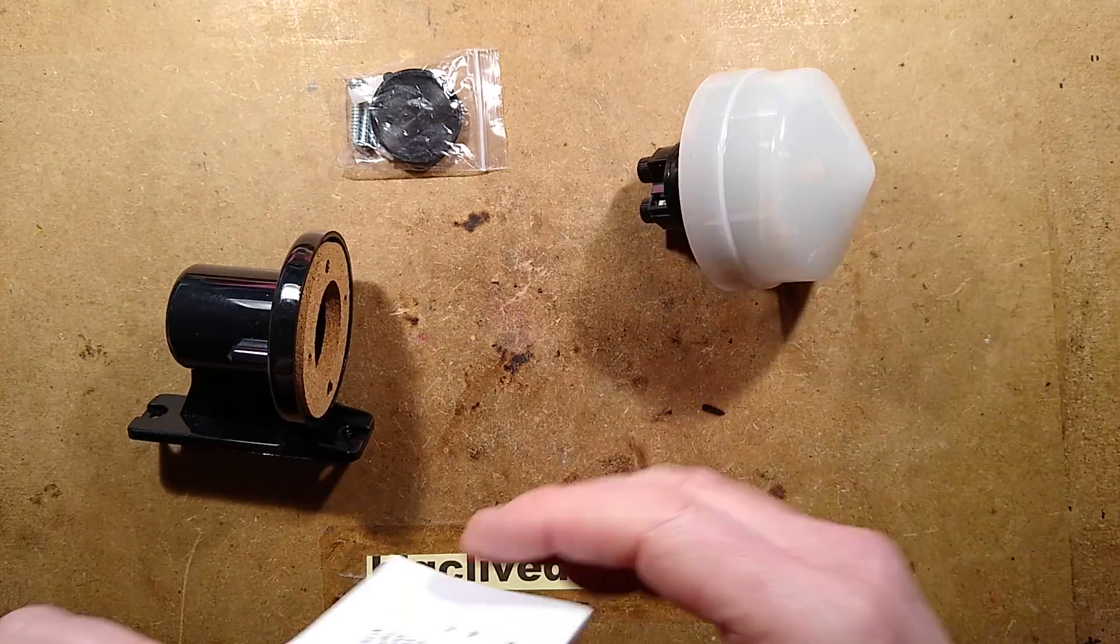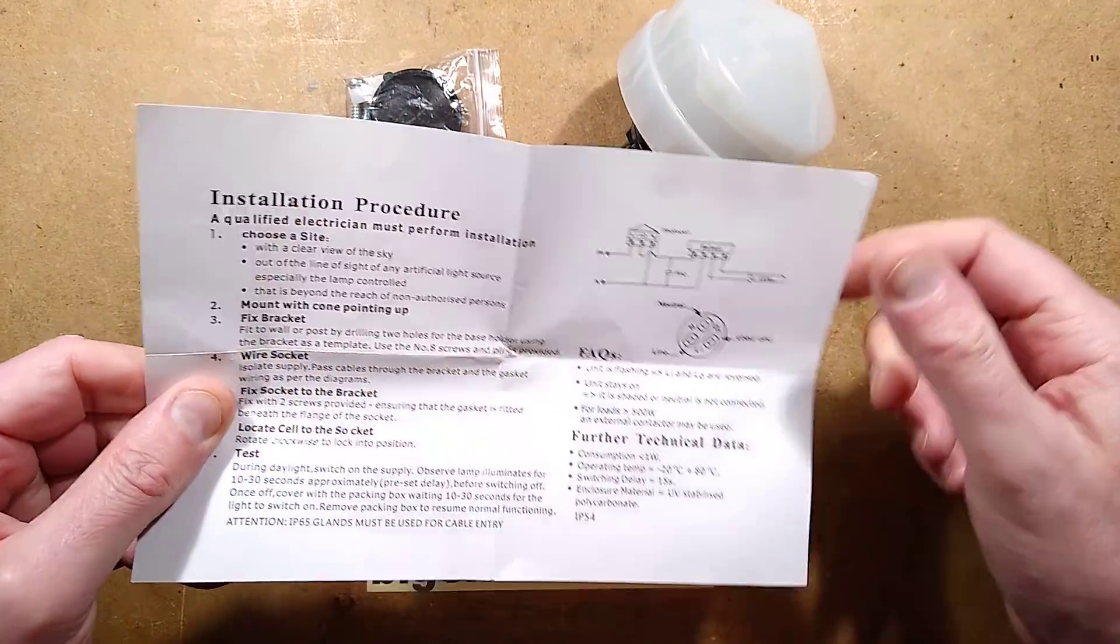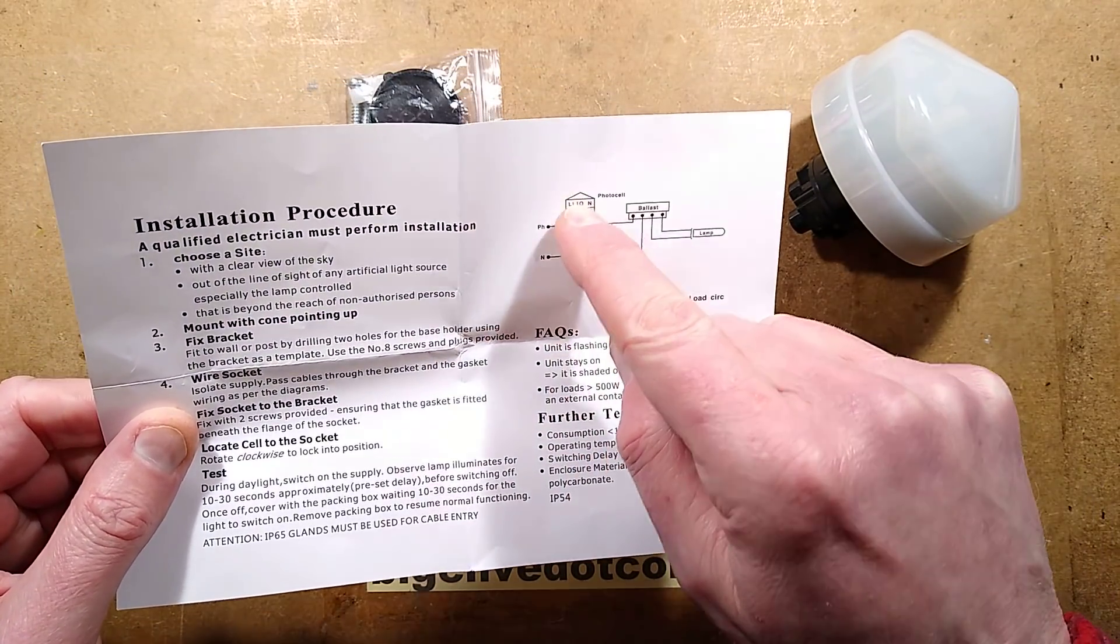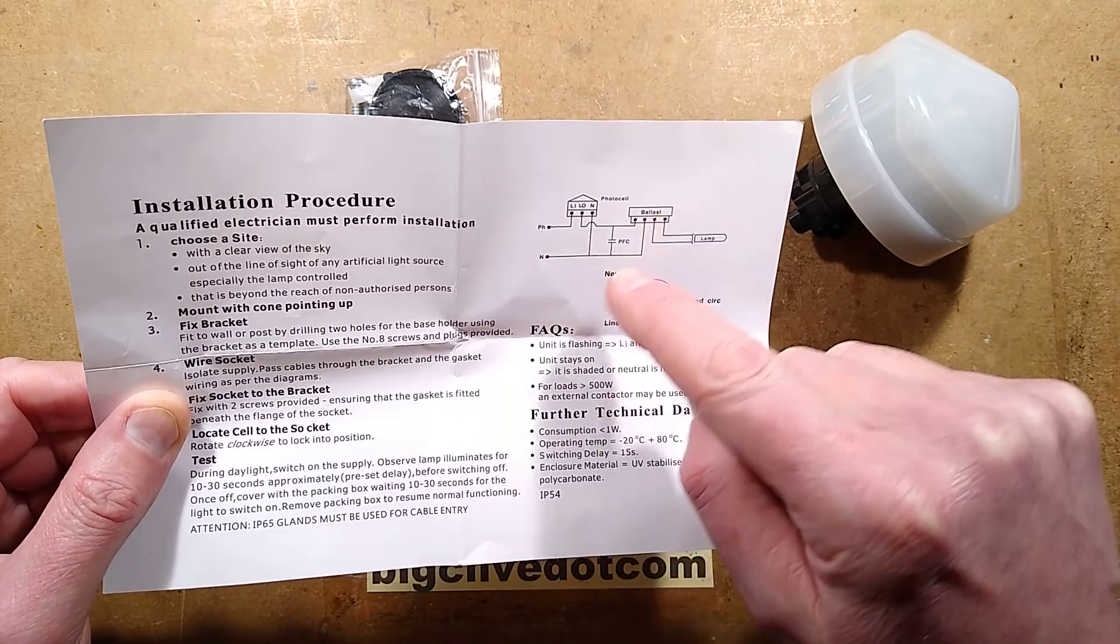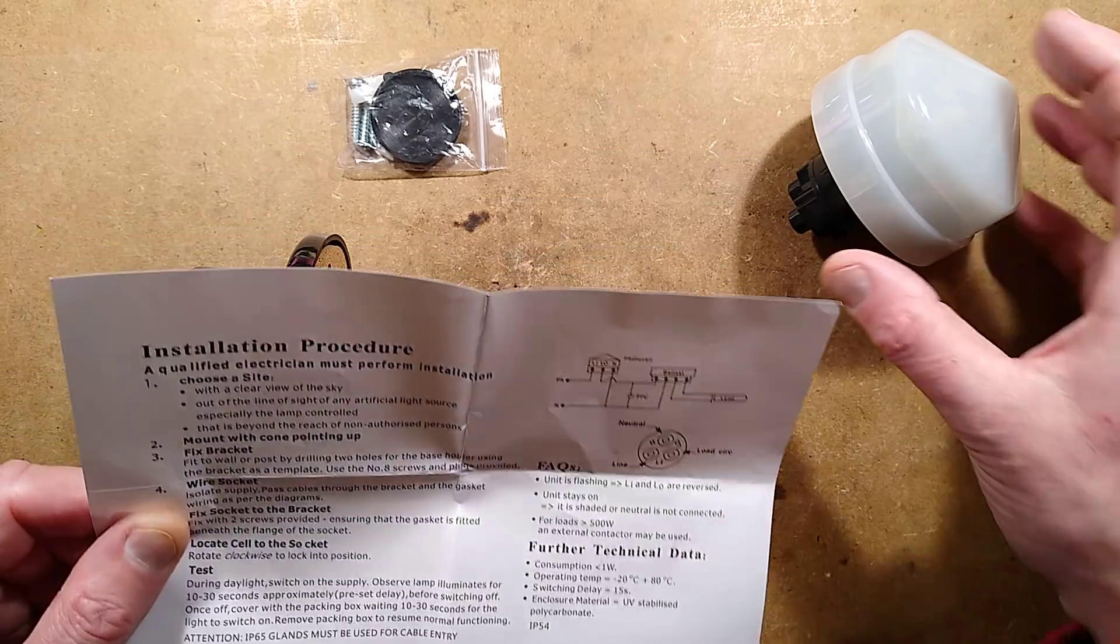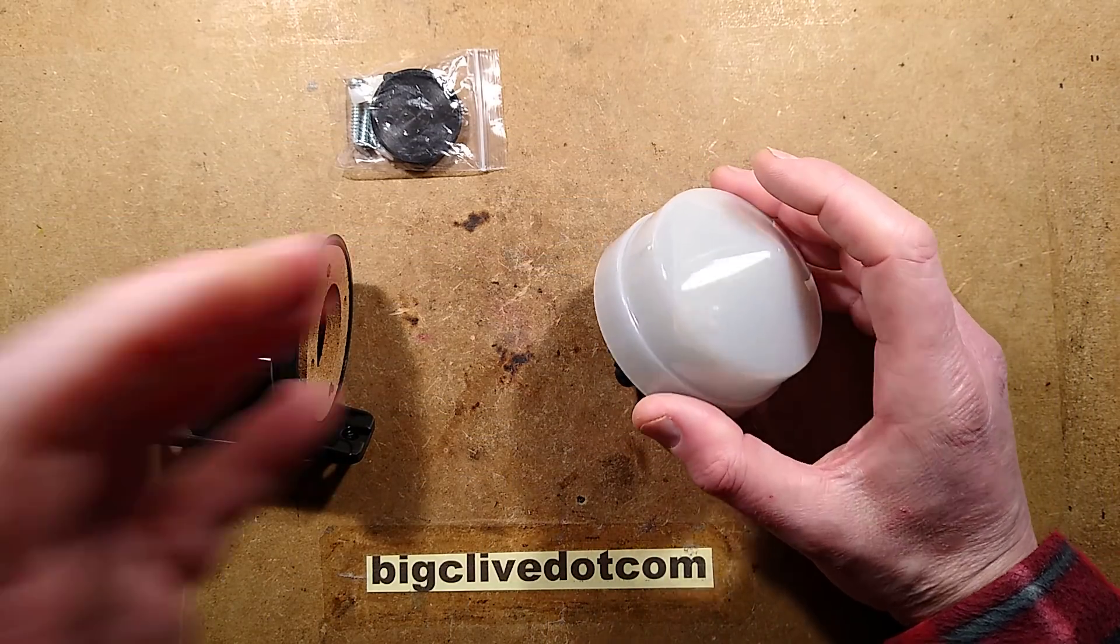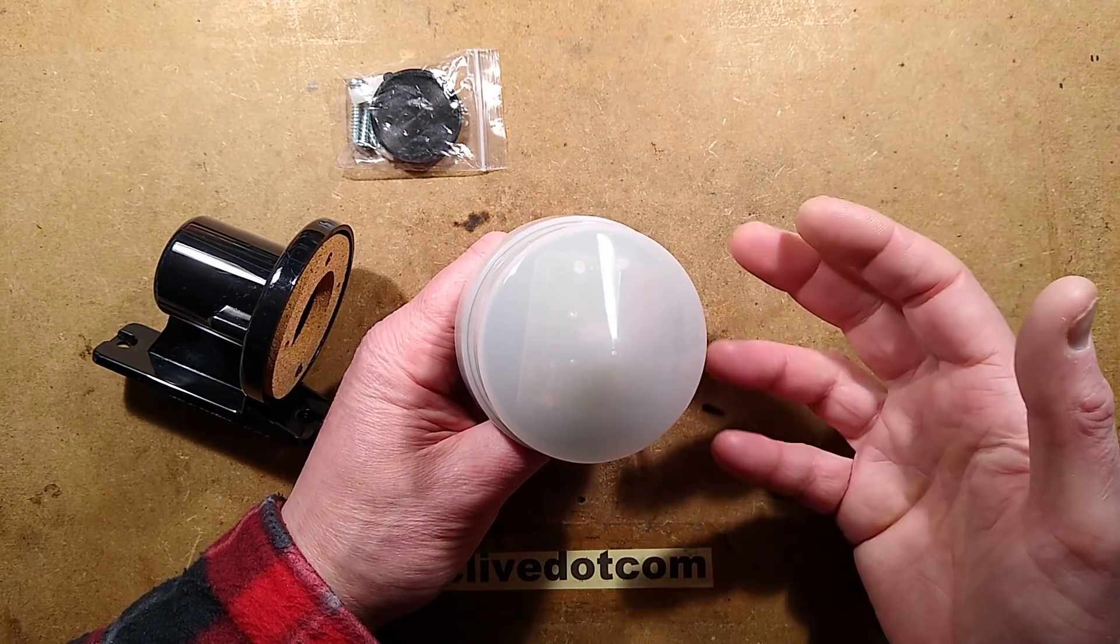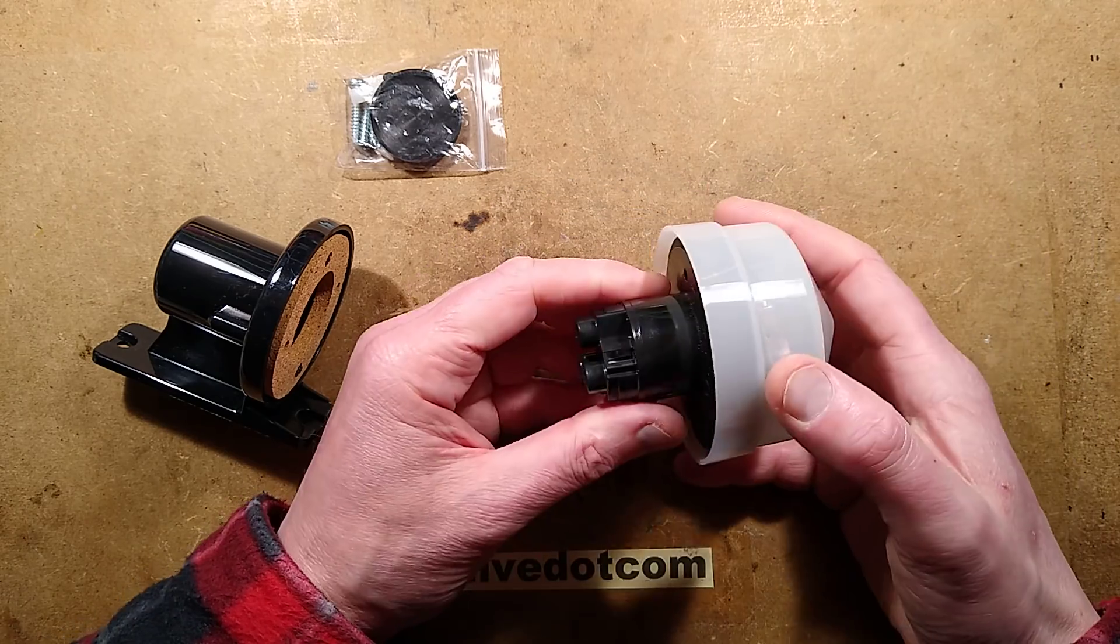The wiring is what you'd expect. It's got phase coming in, live coming in, going to LI, live in. Live out to the load, and then neutral, which loops through this photocell but also goes to the load because the photocell itself requires some power. This has a slight time delay. When you initially power it up, it will turn the lights on for about 10 to 30 seconds before they cut back out again. It's just as it stabilizes.